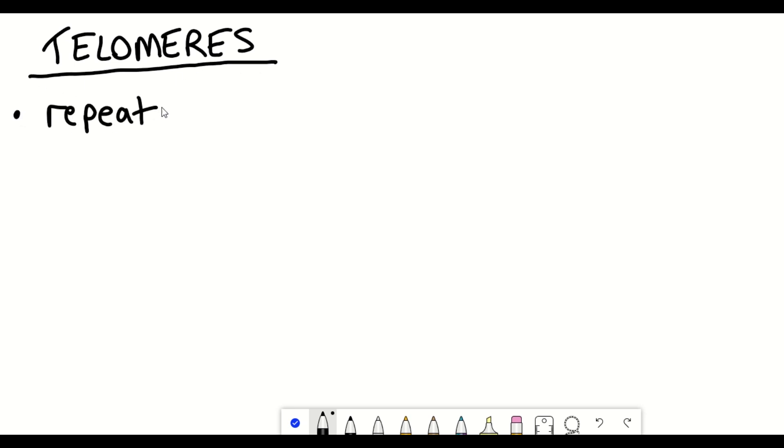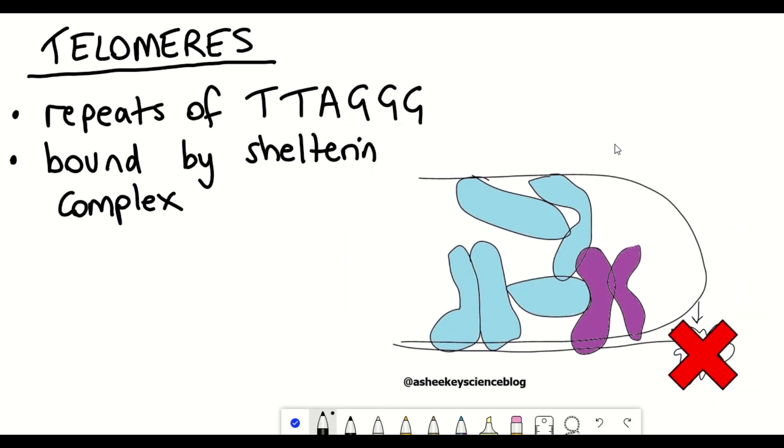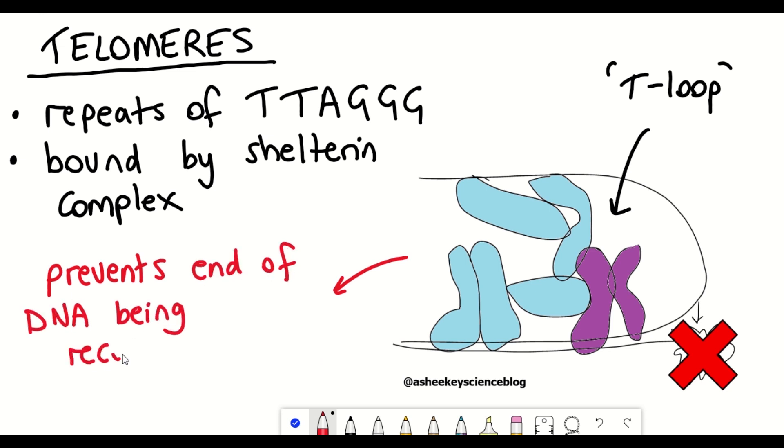These sequences are just repeats of TTAGGG DNA nucleotides, and they're bound by this complex of proteins referred to as the shelterin complex. And so this protects the ends of the DNA from being recognized as double-stranded breaks, which could stimulate the DNA damage response.